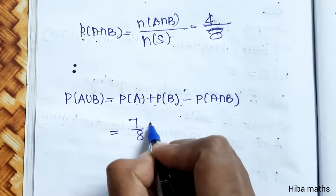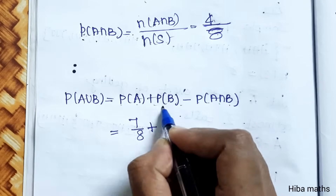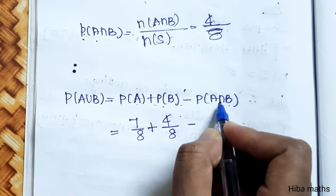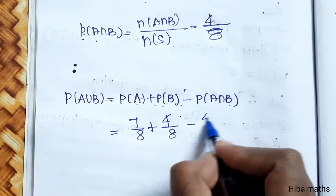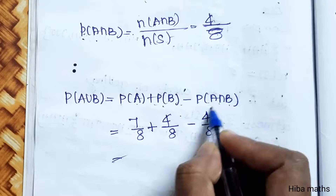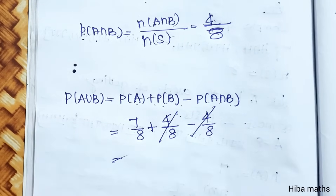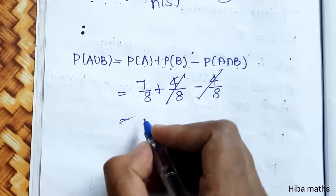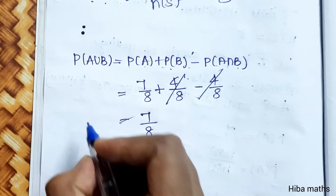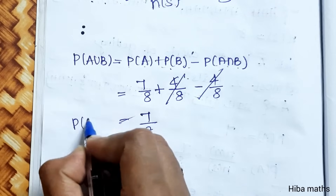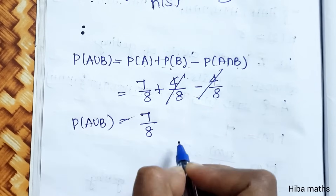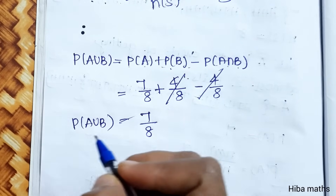P(B) is 4 by 8. Using the union formula: P(A) + P(B) minus the intersection gives 7 plus 4 minus 4, which cancels to give 7 by 8. So the final answer is 7/8. Thank you so much for watching.